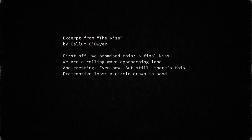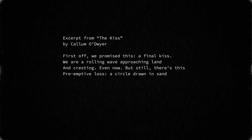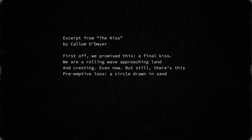So why use enjambment? Well, a poem which doesn't use enjambment can just have one sentence or one phrase per line. That's fine, and many poems are written that way, but it can tend to get a little bit samey, a little bit monotonous, and it doesn't allow the poet the same freedom to use sentences and phrases of varying length. Also, as we can see in Callum's poem, you can strategically use enjambment to create interesting effects playing on the reader's expectations. Take the end of line three: 'but still there's this' — and the line ends. The reader has a split second to wonder, 'what is this?' And then we get it: 'Pre-emptive loss.'